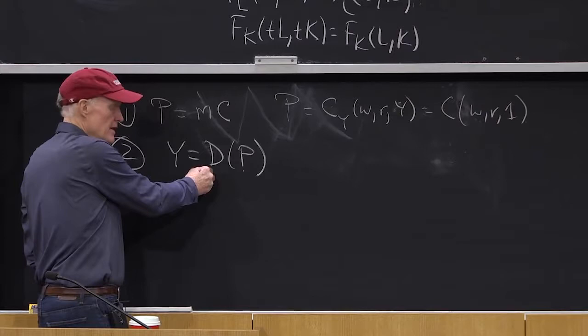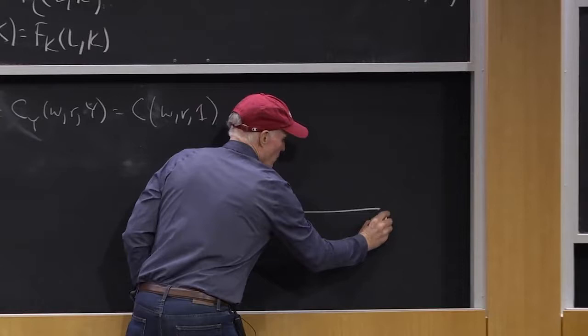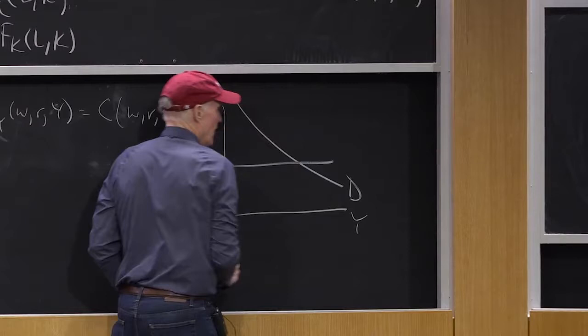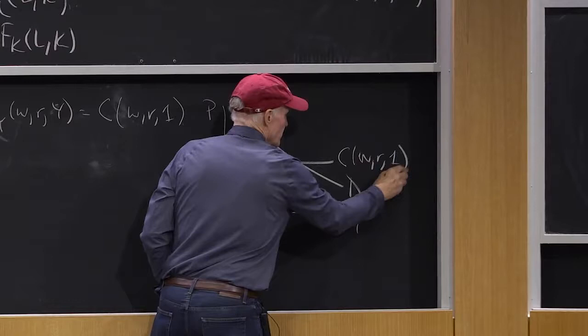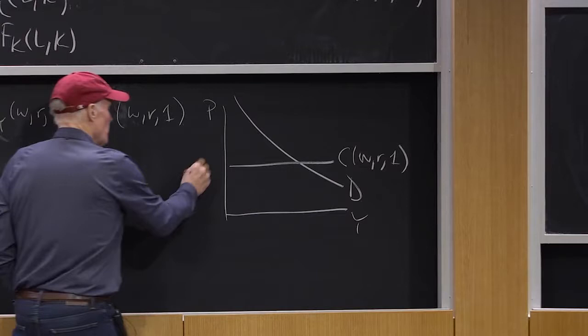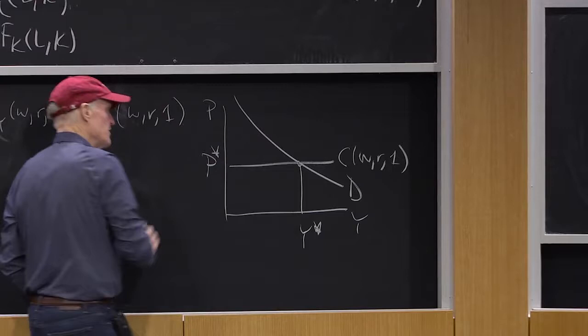Think of it this way. I got Y and P. I got some demand curve. I got C of W, R, and 1. So factor prices determine unit cost. Once I know unit cost, I know the price. Once I know the price, I know the quantity. That's my equilibrium condition.